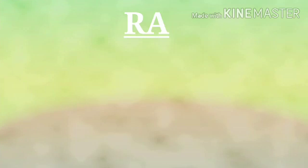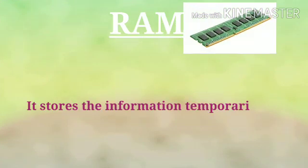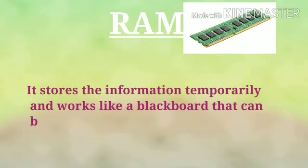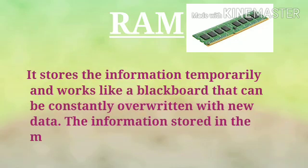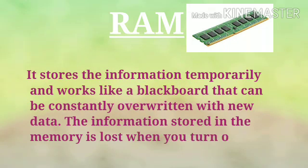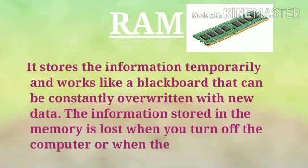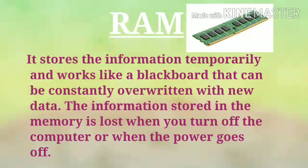There are two parts of primary memory. First is RAM. What is RAM? It stores information temporarily and works like a blackboard that can be constantly overwritten with new data. The information stored in the memory is lost when you turn off the computer or when the power goes off. So RAM is also known as volatile storage memory, since as soon as the current goes, the information stored in RAM is lost. It is temporary storage.